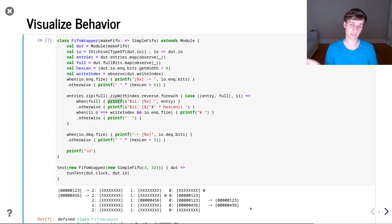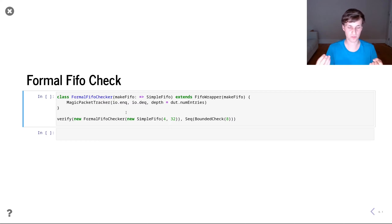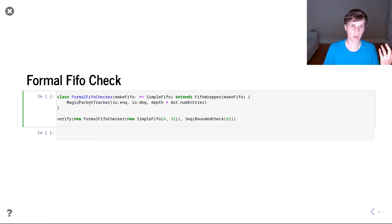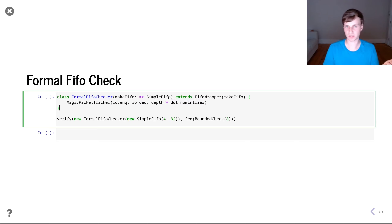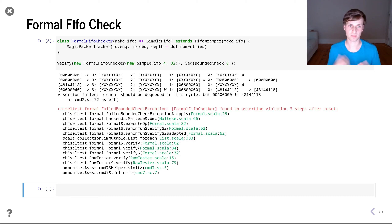Now we'll actually do a formal check. The correct functioning of a FIFO is a widely-needed property, and many FIFOs in Chisel have a similar interface with enqueue and dequeue ports. So we made a reusable verification IP called the magic packet tracker, now part of chiseltest. You just give it the inputs and outputs of your FIFO and how many entries it should contain, instantiate it in a wrapper, and automatically do a formal check — here for eight cycles after reset.